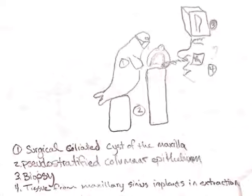These lesions are caused by inoculation of sinus tissue into a gingival lesion, typically an extraction site. The sinus epithelium differs from typical gingival epithelium, resulting in a growth of pseudostratified columnar epithelium in a location where it shouldn't grow.